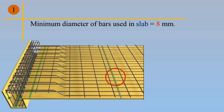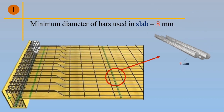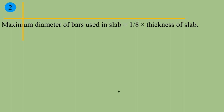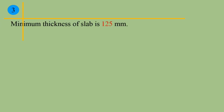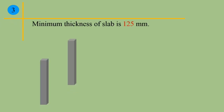Point 1: Minimum diameter of bars used in slab is 8 mm. Point 2: Maximum diameter of bars used in slab is 1/8 multiplied by the thickness of slab. Point 3: Minimum thickness of slab is 125 mm.